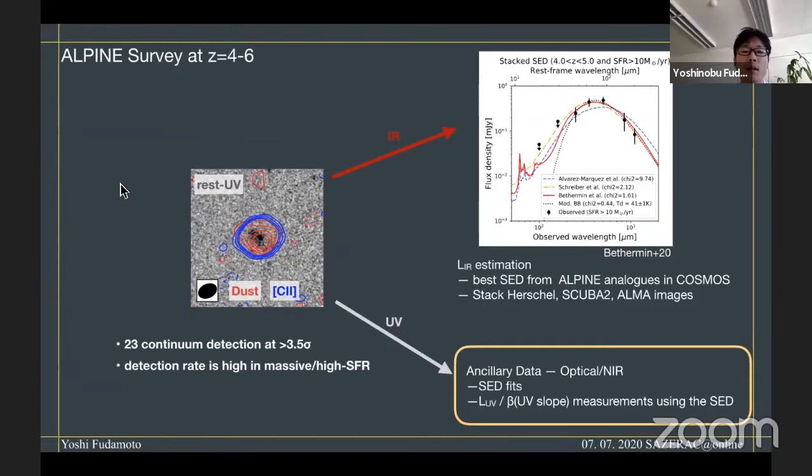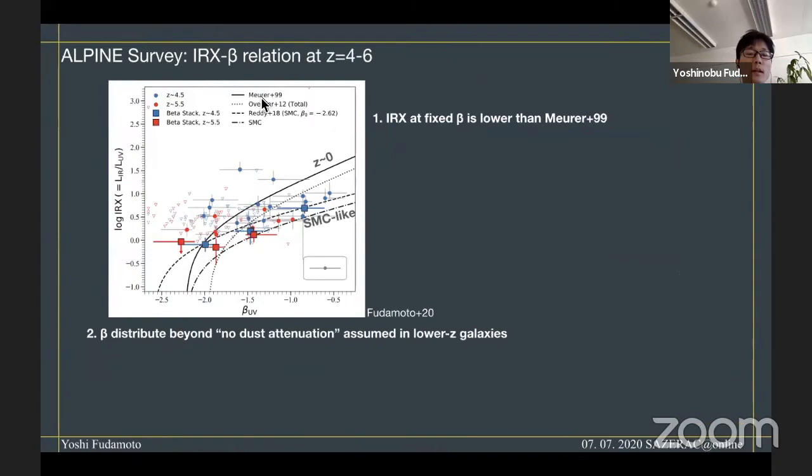Let's go back to the dust attenuation of high-redshift galaxies. To study these dust attenuation properties, we first need to estimate infrared luminosity of these galaxies. To do that, we first created the average infrared SED of these galaxies using ALPINE analogues in COSMOS, in terms of stellar mass and star formation rate similar to the ALPINE selections. Using stack analysis of Herschel, SCUBA-2, and ALMA images, we created this average SED applicable to these ALPINE samples to estimate infrared luminosity. Because these galaxies have a large amount of ancillary data, using this ancillary data we performed SED fitting to estimate UV luminosity and UV spectral slope. Using this information, we created the IRX-beta diagram for these high-redshift galaxies.